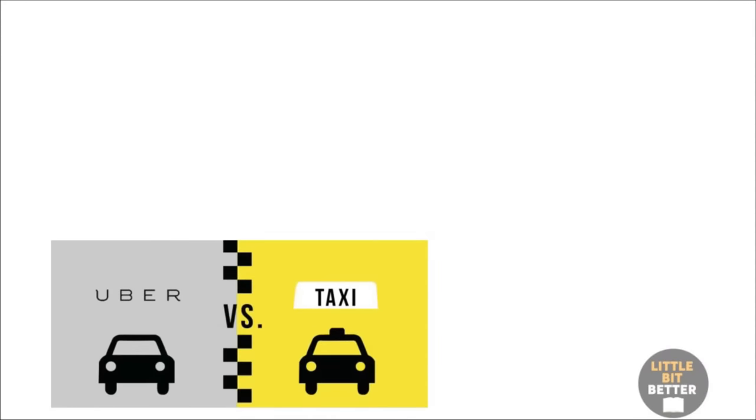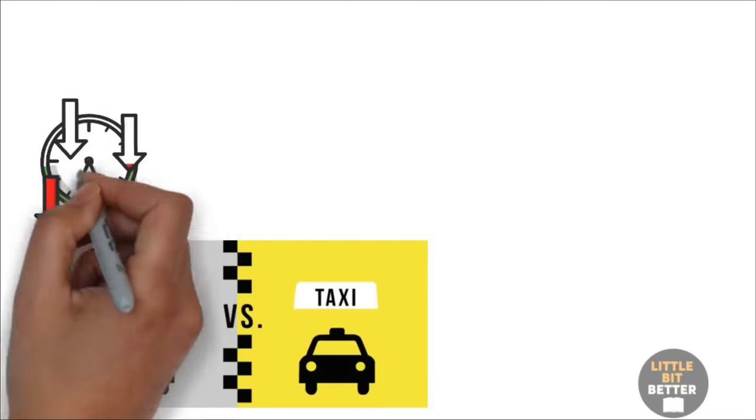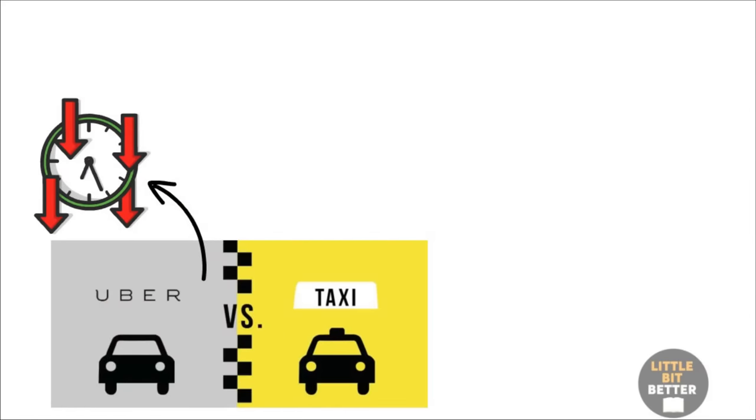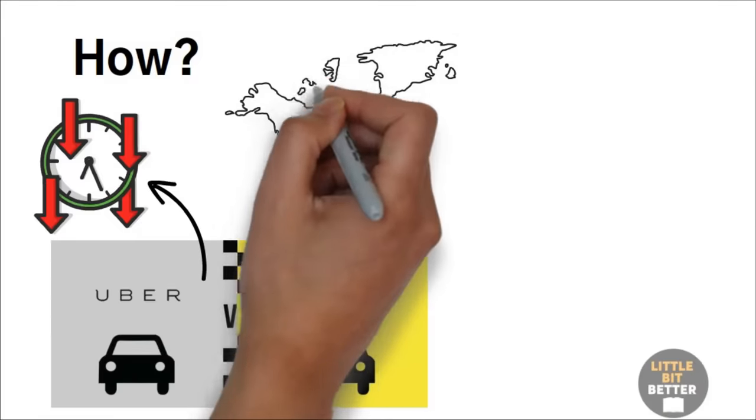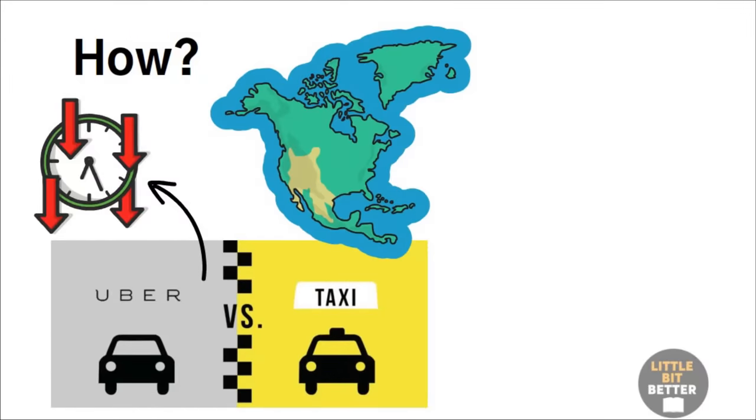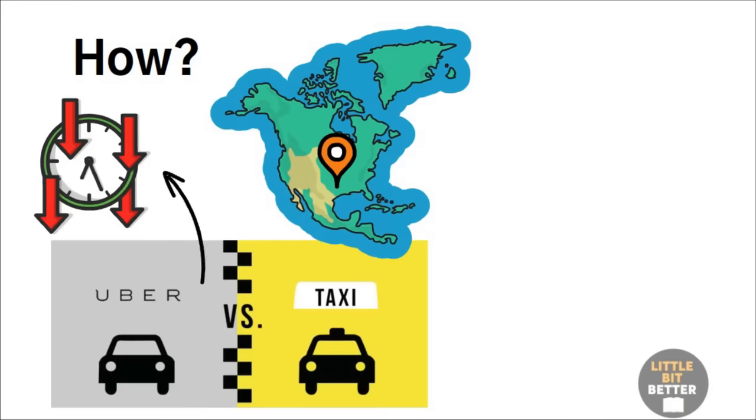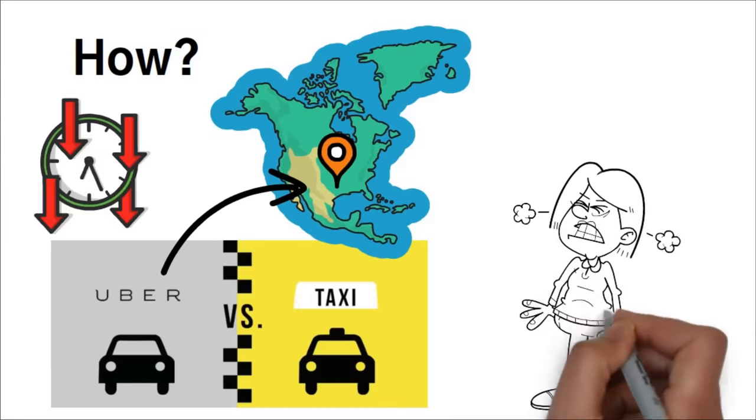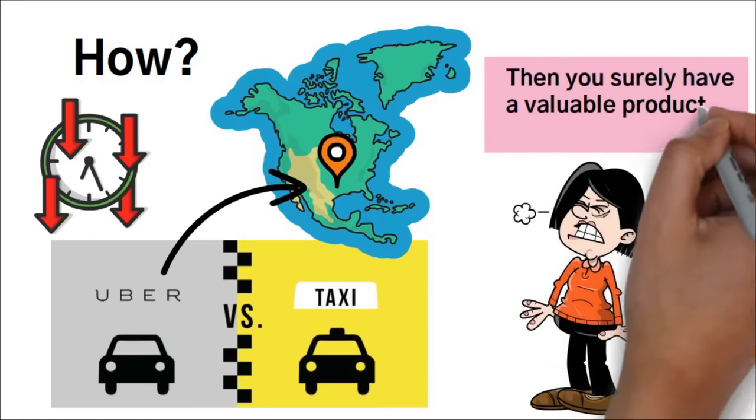Compare Uber to taxis, for example. You probably feel like Uber gets to you really faster than a taxi. The thing is, Uber didn't necessarily reduce the time it takes for the car to get to you. Instead, they reduced the uncertainty of how long you had to wait. How? By showing you a map. When you can see where the driver is and have an estimated arrival time, you feel more in control and less anxious about waiting. We're happier waiting 10 minutes for a car knowing it'll take 10 minutes than waiting 5 minutes for a car in a state of uncertainty. Humans hate uncertainty, so if you can find a way to reduce it, then you surely have a valuable product or service in your hands.